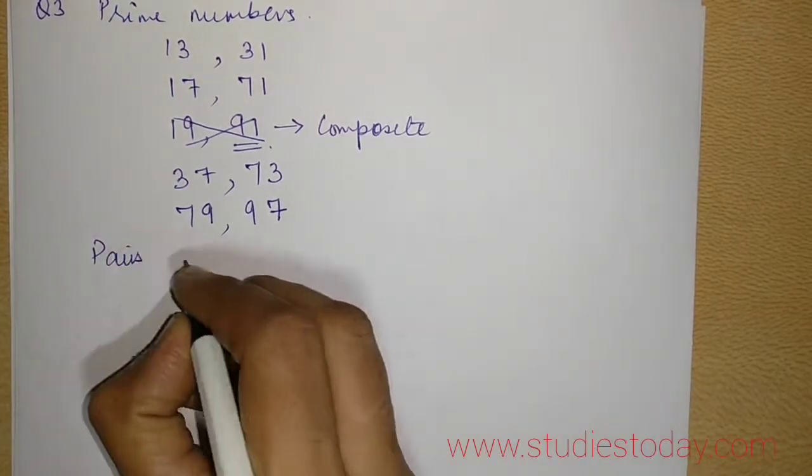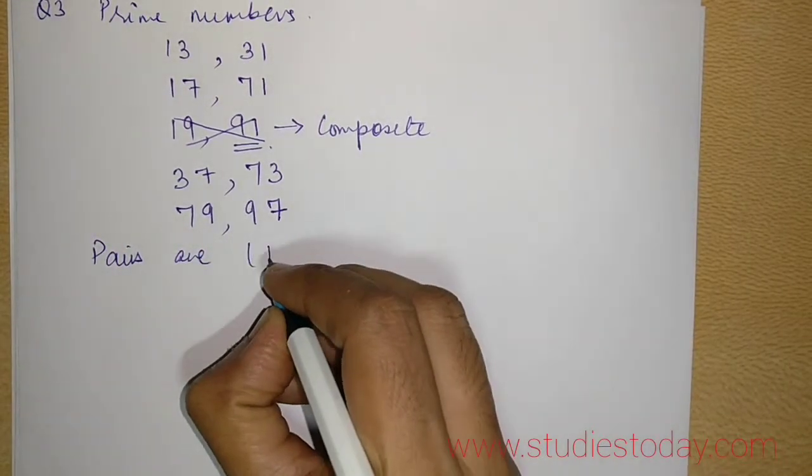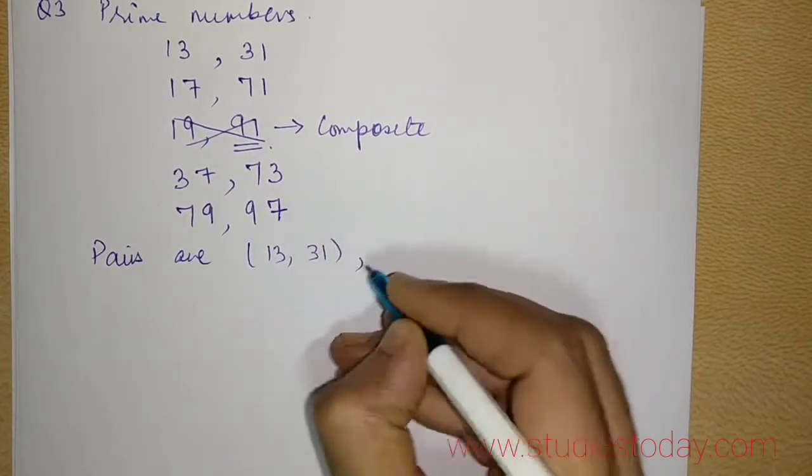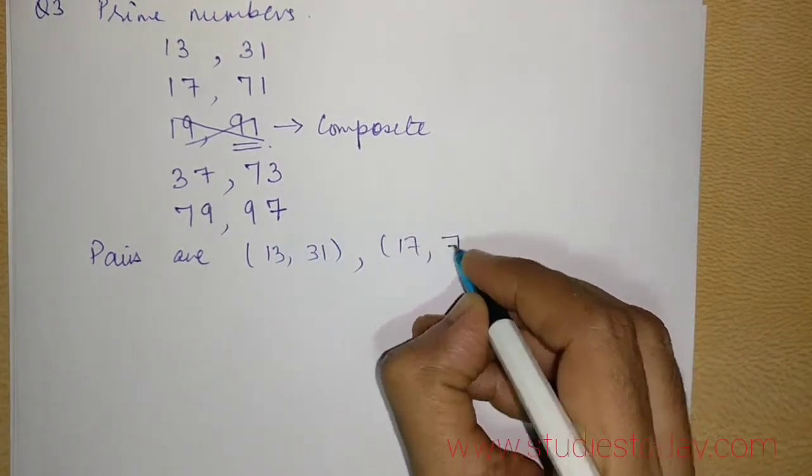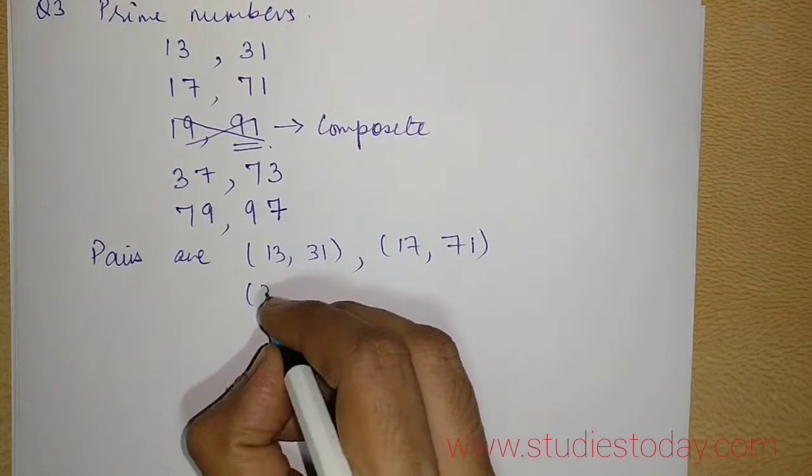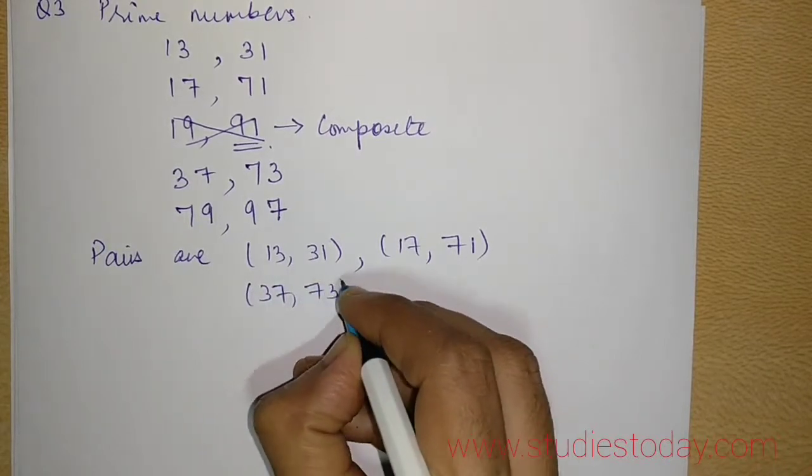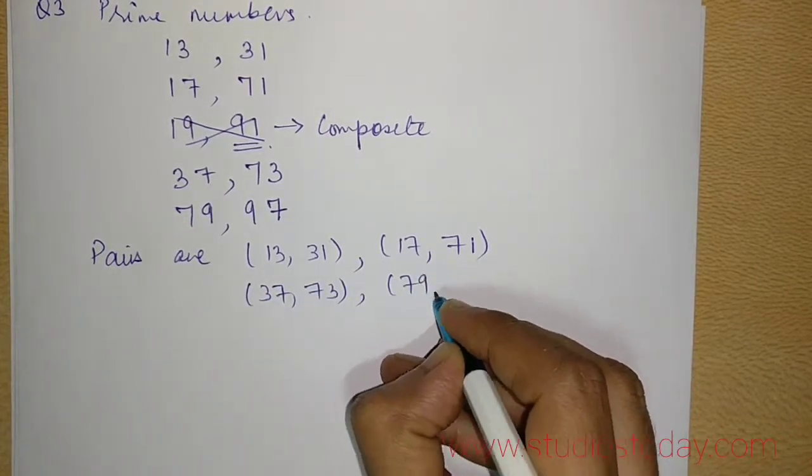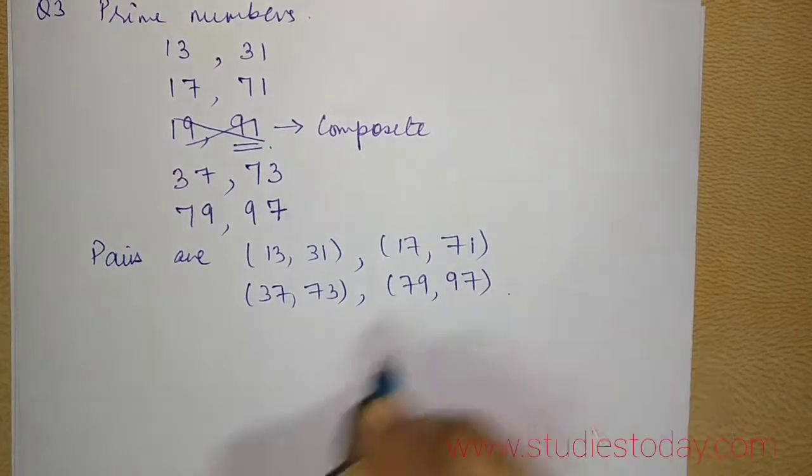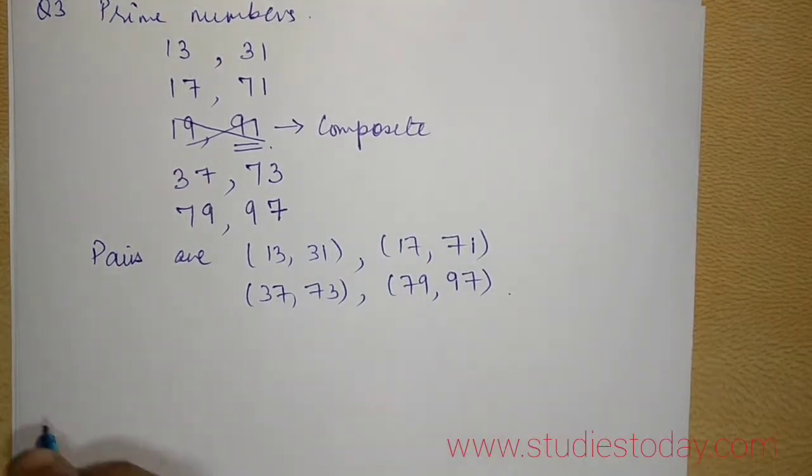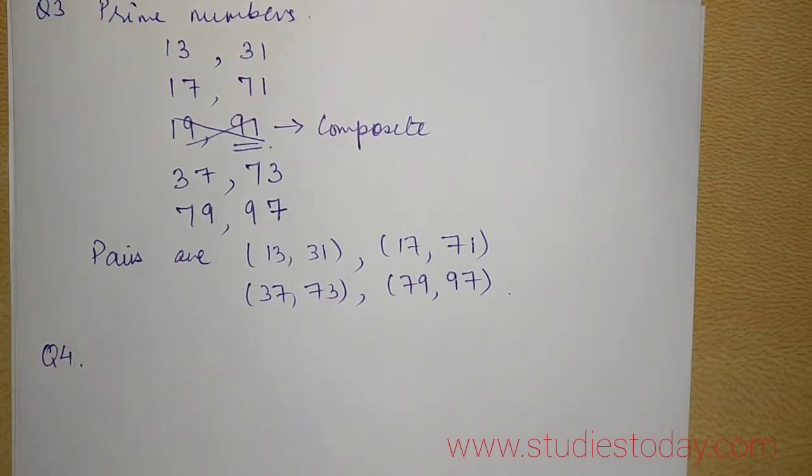So the pairs are 13 and 31, 17 and 71, 37 and 73, 97 and 79. I set it in the reverse order.